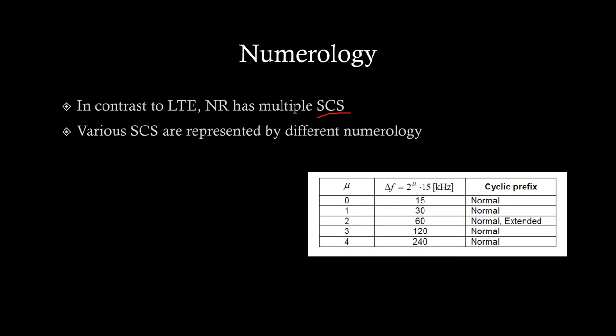So, 15 kHz will be the smallest subcarrier spacing and as we go down the table, we have wider subcarrier spacings. NR has subcarrier spacing ranging from 15 to 240 kHz. And as seen in the table, extended cyclic prefix is supported only in 60 kHz case.